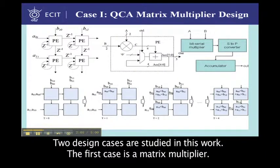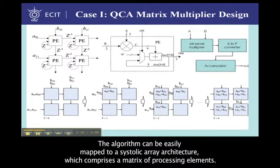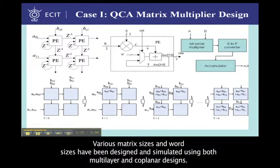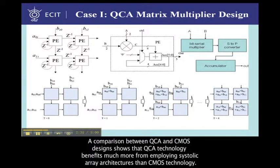Two design cases are studied in this work. The first case is a matrix multiplier. The algorithm can be easily mapped to a systolic array architecture, which comprises a matrix of processing elements. Input data are pumped into this array and pass across it. Various matrix sizes and word sizes have been designed and simulated using both multi-layer and coplanar designs. A comparison between QCA and CMOS designs shows that QCA technology benefits much more from employing systolic array architectures than CMOS technology.